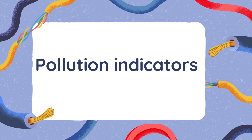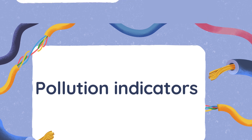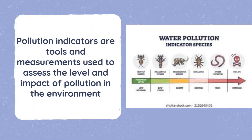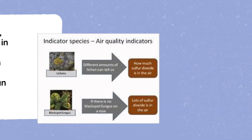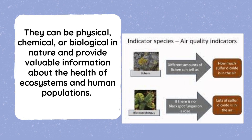Pollution indicators are tools and measurements used to assess the level and impact of pollution in the environment. They can be physical, chemical, or biological in nature and provide valuable information about the health of ecosystems and human populations.